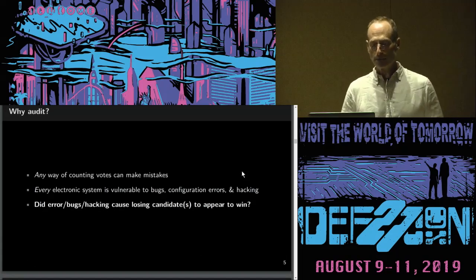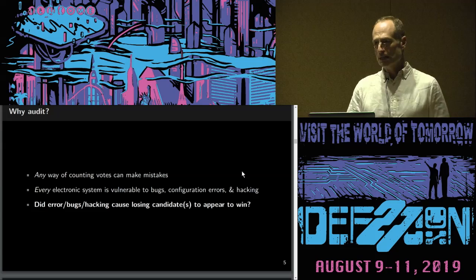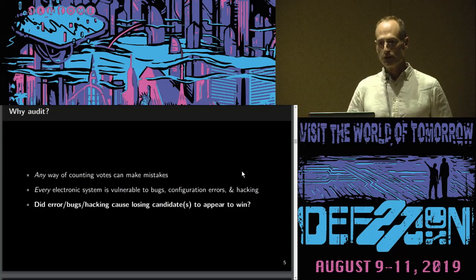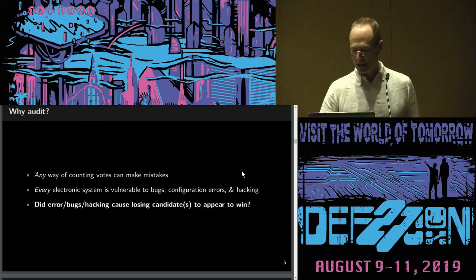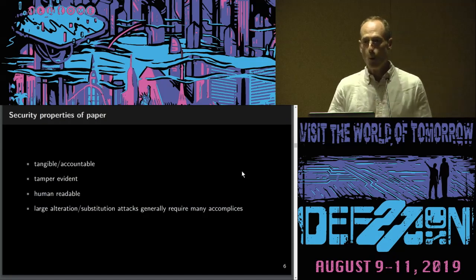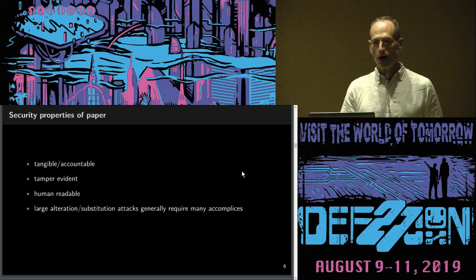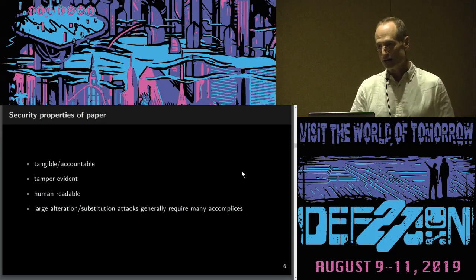Any way of counting votes can make mistakes. Every electronic system is vulnerable to bugs, configuration errors, and hacking. The question is: did this almost-inevitable stuff actually change who appeared to win — was it material? It turns out that paper is a wonderful medium for conducting elections. It has desirable security properties that make it essential in conducting secure, verifiable elections.